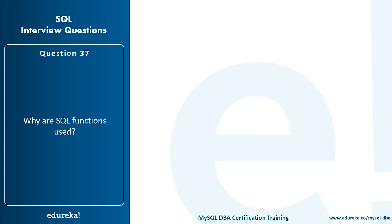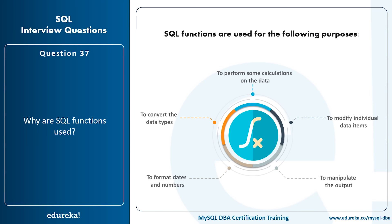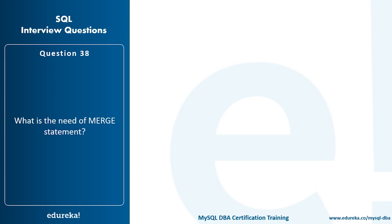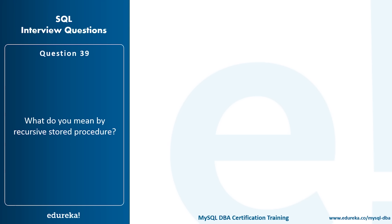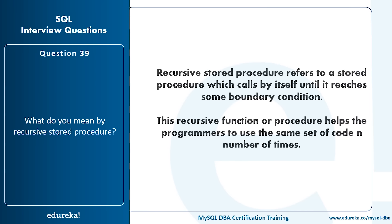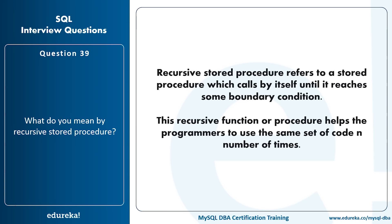Why are SQL functions used? SQL functions are used to perform calculations on data, modify individual data items, manipulate output, format dates and numbers, and convert data types. What is the need for the MERGE statement? The MERGE statement allows conditional update or insertion of data into a table — it performs an UPDATE if a row exists, or an INSERT if the row doesn't exist. What do you mean by a recursive stored procedure? A recursive stored procedure calls itself until it reaches some boundary condition, helping programmers reuse the same set of code multiple times.